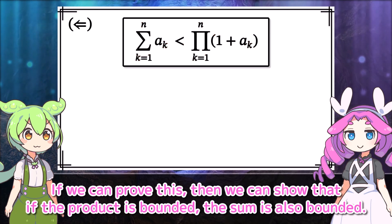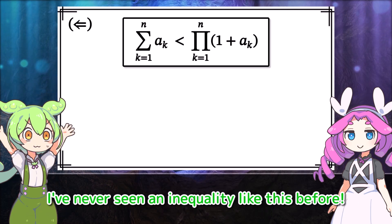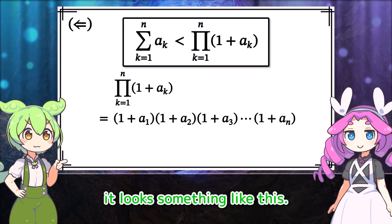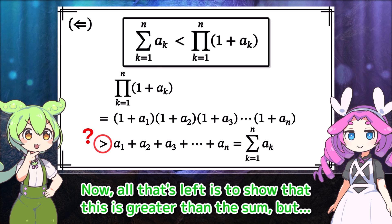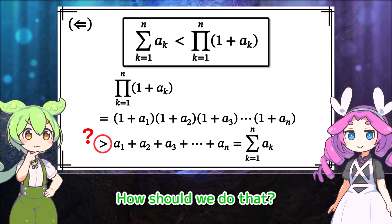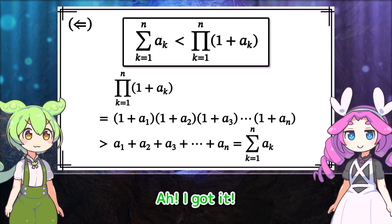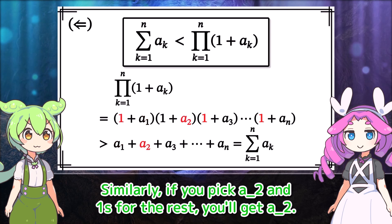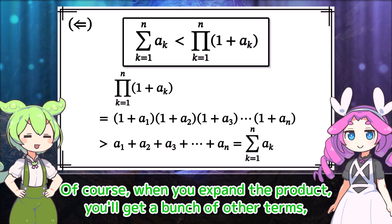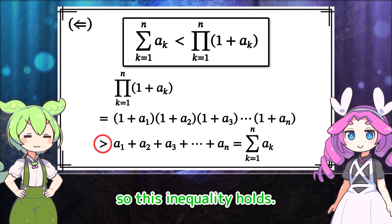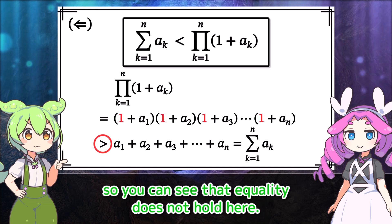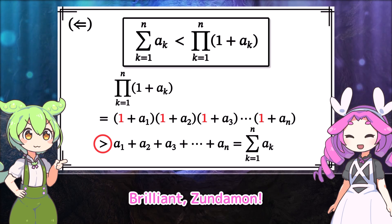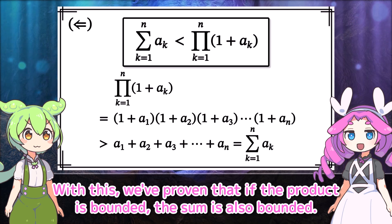So we can just prove that if one is bounded from above, the other is also bounded from above. Let's start by proving this inequality. If we can prove this, then we can show that if the product is bounded, the sum is also bounded. If we write out the product according to the definition and expand it — you pick a_1 and then 1s for the rest, and you get a_1; similarly, pick a_2 and 1s for the rest, you get a_2 — you keep doing that. When you expand the product you get additional terms, so this inequality holds. If you pick 1s for all terms you get 1, so equality does not hold here. With this, we've proven that if the product is bounded, the sum is also bounded.